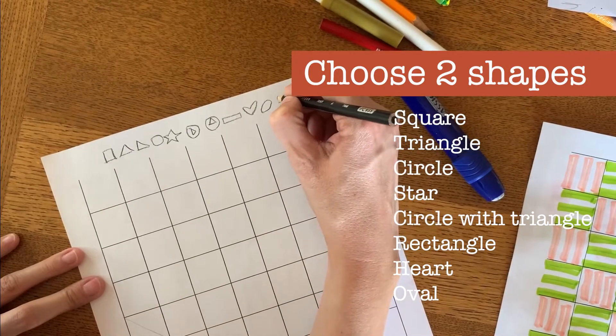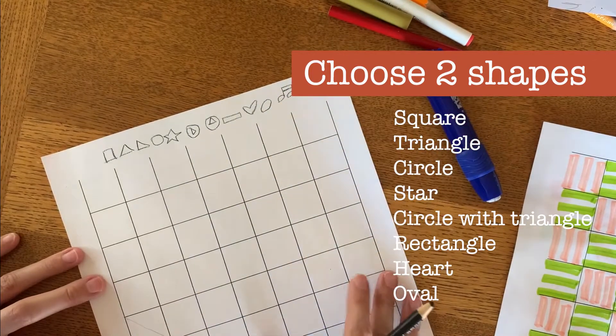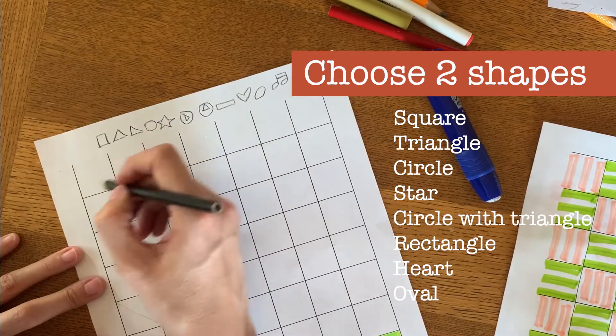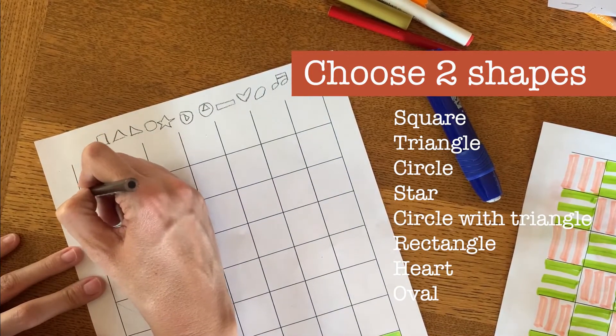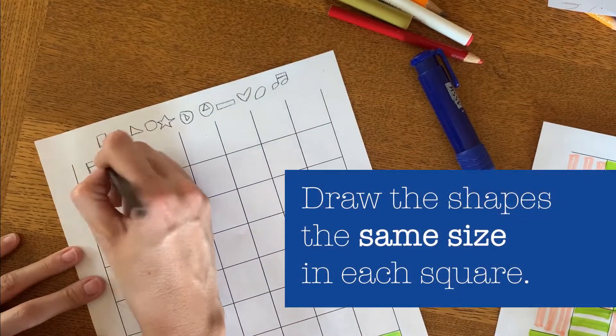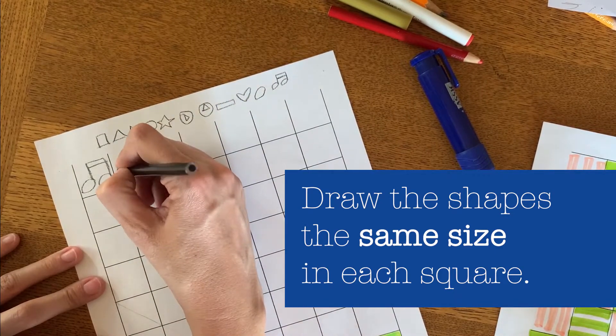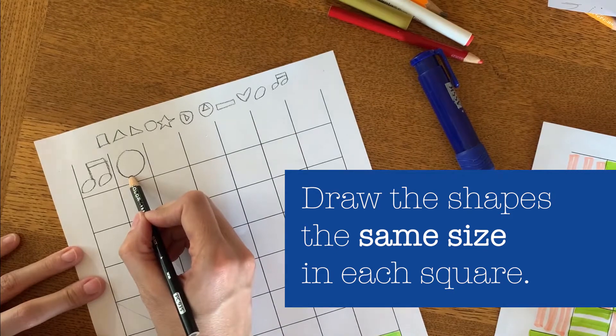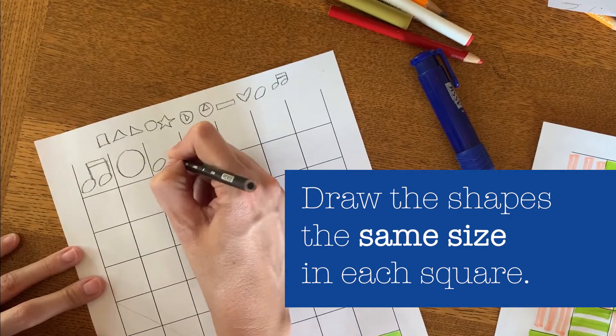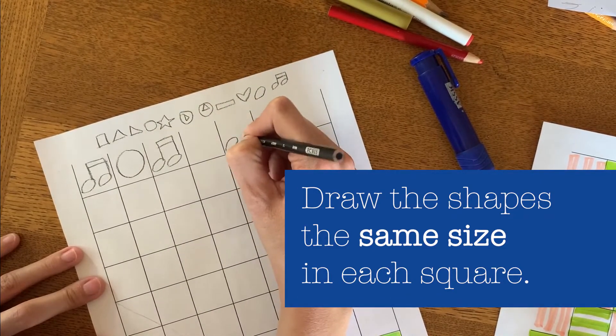There was a student that used two ovals and made music notes with it. So whatever you choose, you're just going to choose two shapes. Let's do the, let's try the music notes because that's pretty fun. And I could repeat that pretty easily and how about we just do a circle. So the circle needs to stay the same size and so does the music note.